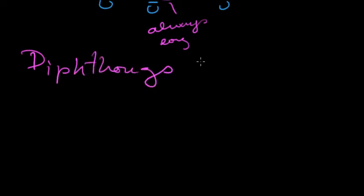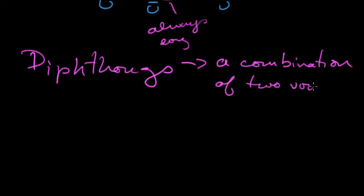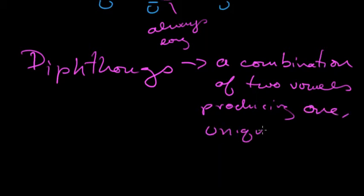So, what is a diphthong? It's a combination of two vowels producing, I'm just making this up now, but it's the right definition, of two vowels producing one unique, maybe we'll say, vowel syllable.